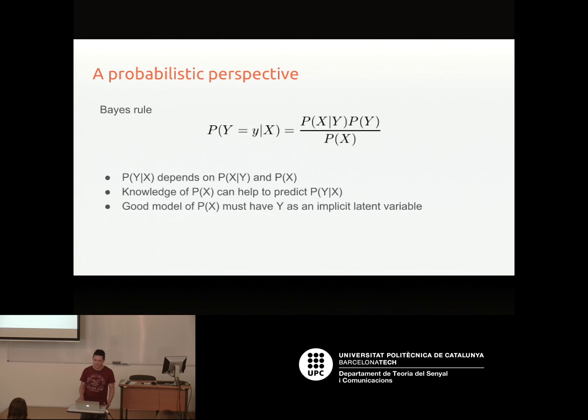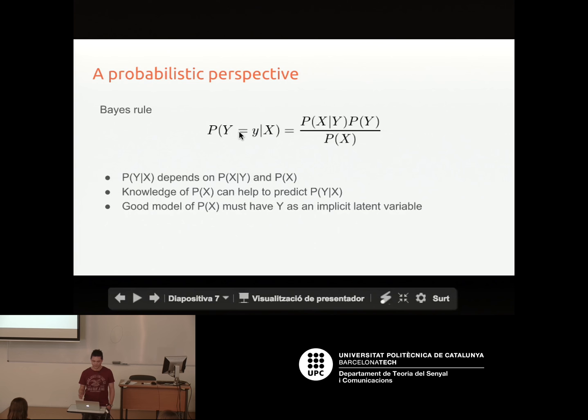From a probabilistic perspective, in classification we want to find the probability that the label equals Y given the data. By Bayes' rule, that's the probability of the data given the label, times the probability of the label, over the probability of the data.